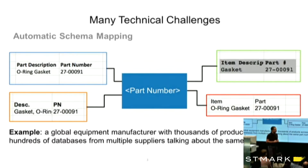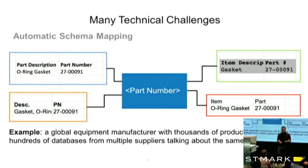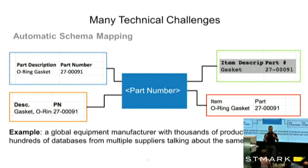The first one is what we call automatic schema mapping. It's a very old problem about how to connect the schema between disparate data sources. In the classical example, multiple tables talk about the same set of records but describe them differently. So I'd like to make sure that 'P', 'part number', and 'part' are talking about the same attribute of some real-world entity. A global equipment manufacturer trying to harmonize thousands of sources is a very classical problem with tons of research.